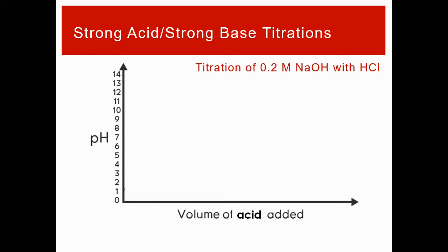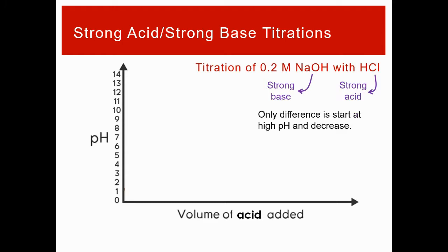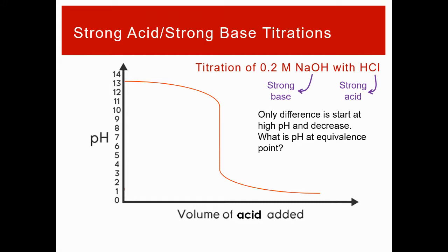If you do the reverse titration — 0.2 molar NaOH with HCl — the shape of the curve is the same, but you start at a high pH and it decreases as you add acid. The pH at the equivalence point is still exactly 7, because it's the same reaction: NaOH + HCl → NaCl + H₂O, producing a neutral salt and water.